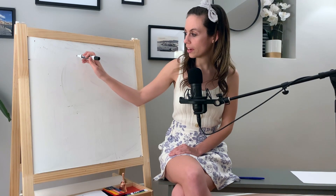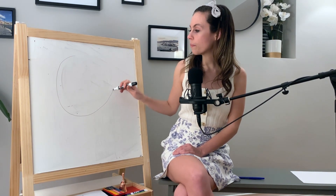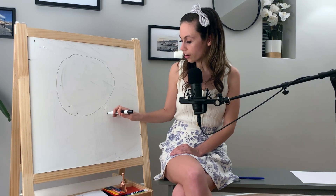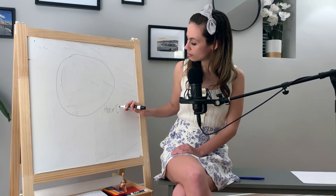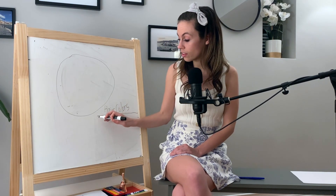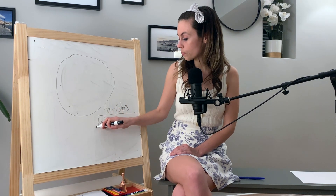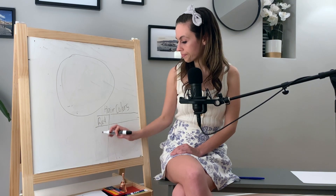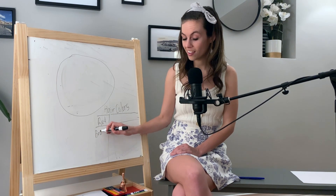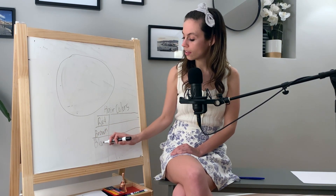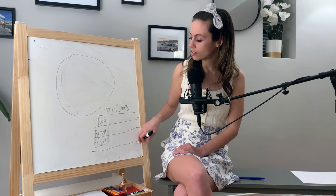We're going to make a pie graph with the students' hair colors in our class. This will always have a circle for our pie graph, and we're going to collect data on hair colors. So, we have students in here with red, brown, black, and blonde hair.